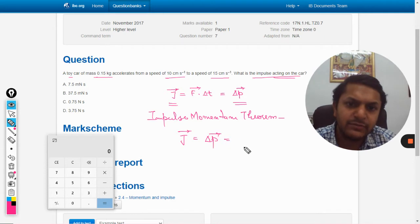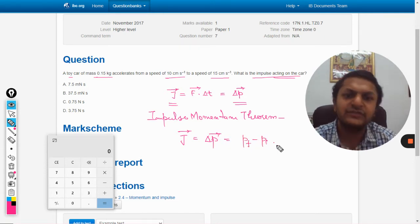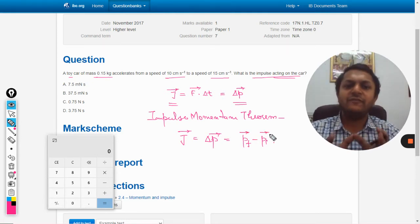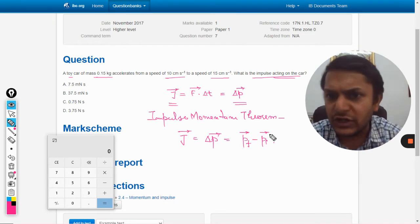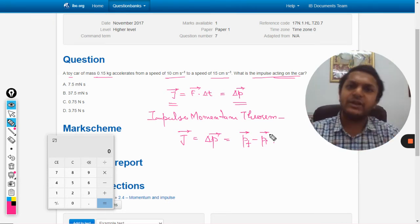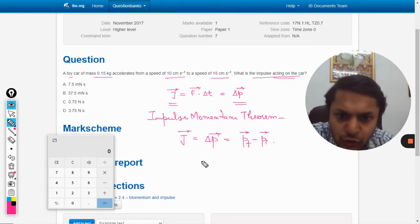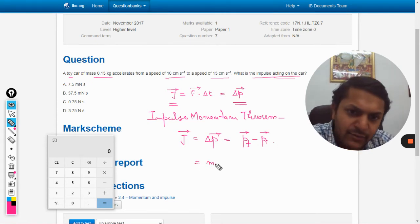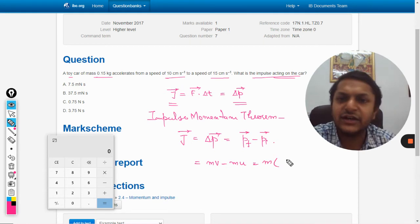So change in momentum is the momentum final minus momentum initial. Always try to remember that momentum is a vector quantity, so we will have to see this thing. But now there is no collision, so the bodies are moving in the same direction, so that doesn't matter. What is the change in momentum? M times V minus M times U. Mass is taken common: M(V - U).